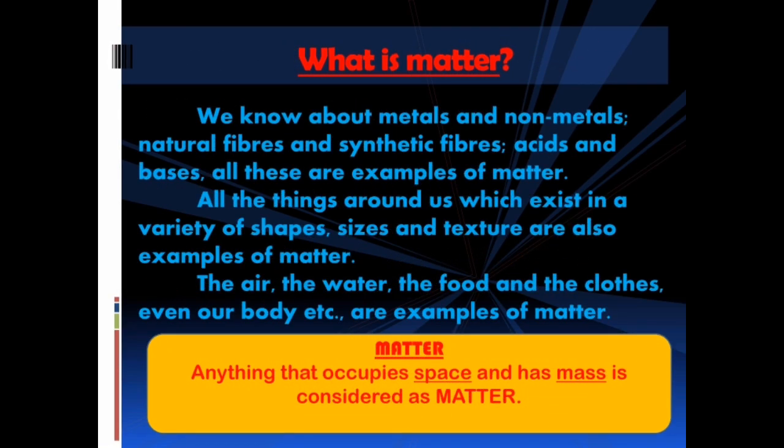First we shall know what is matter. We know about metals and non-metals, natural fibers and synthetic fibers, acids and bases. All these are examples of matter. All the things around us which exist in a variety of shapes, sizes and textures are also examples of matter. The air, the water, the food and the clothes, even our body are examples of matter. Anything that occupies space and has mass is considered as matter. Whatever is in your surroundings is matter, and sometimes we say we are alone, but we are surrounded by matter.